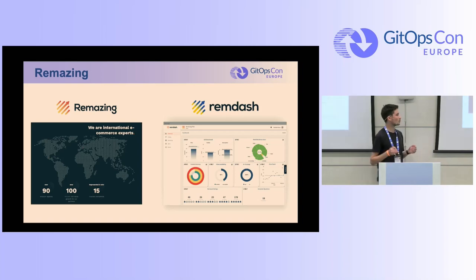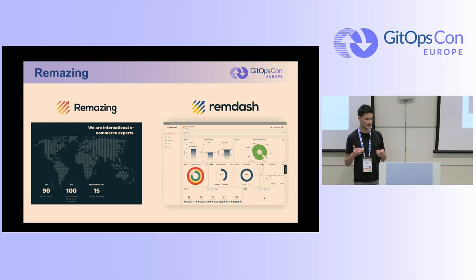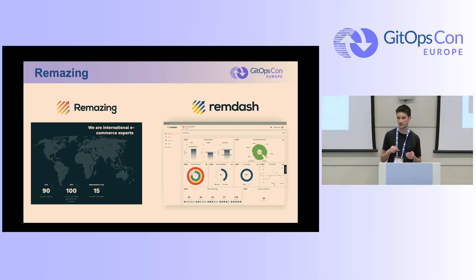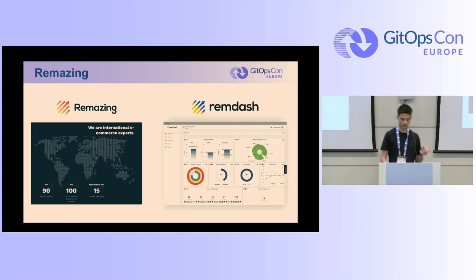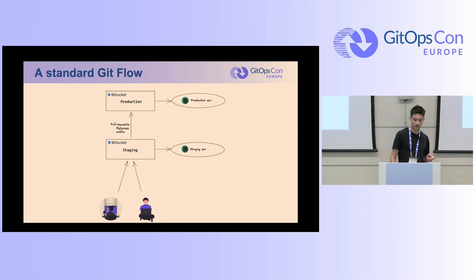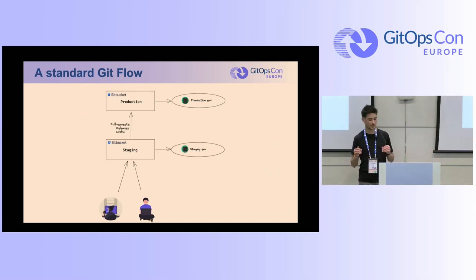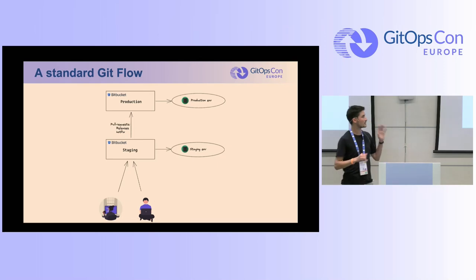About the company, so you can understand why we built preview environments. It's an agency with software we build in-house and sell to other companies. This software is multi-tenant — I'll refer to it later as Remdash. And that's for this software that we build preview environments. One year ago, we still used a basic workflow for our main software. We have plenty of microservices, but this one had a simple Git flow.